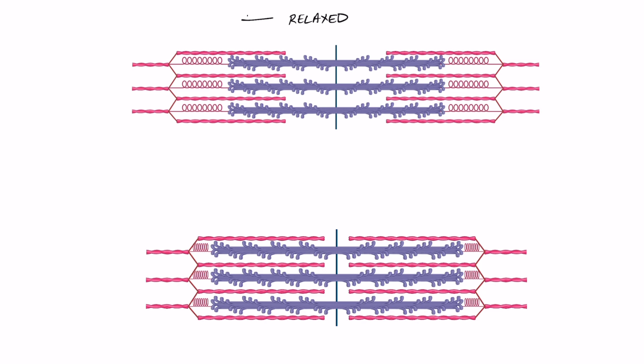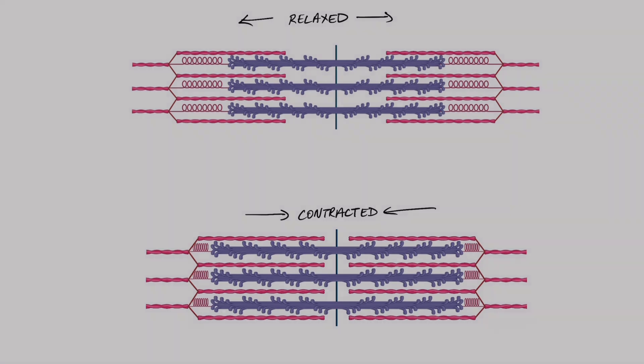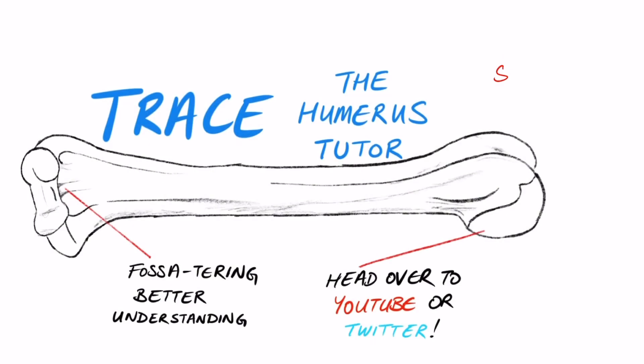Here we have a schematic of the sarcomere in a relaxed state up the top and a contracted state down the bottom. Note how the thin and thick filaments don't actually contract themselves. Rather, it's the thick filaments pulling the thin filaments together, and also noting how the elastic filament composed of titin has been shortened. That's how contraction happens via a process called excitation-contraction coupling, which I will cover in a future video.